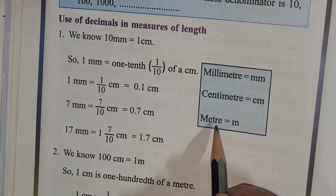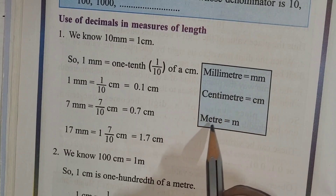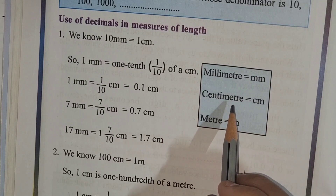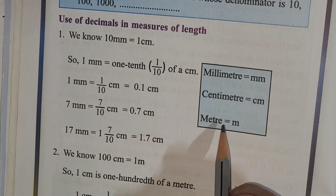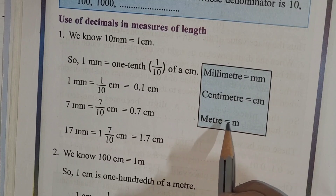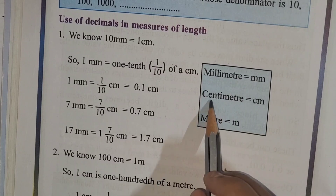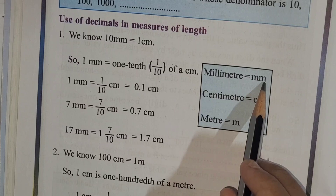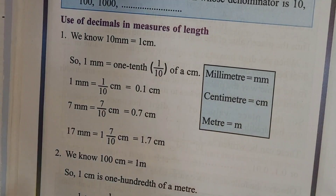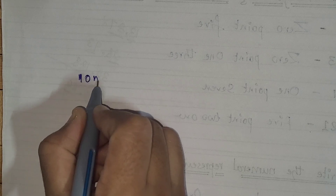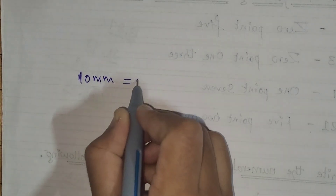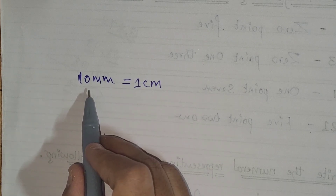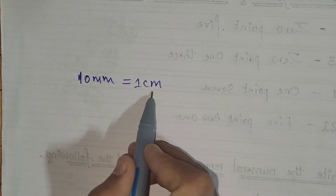Instead of writing the whole word — meter (M-E-T-R-E), centimeter (C-E-N-T-I-M-E-T-R-E) — we write short forms: meter is 'm', centimeter is 'cm', millimeter is 'mm'. You already know that 10 millimeters equals 1 centimeter, or 1 centimeter equals 10 millimeters.